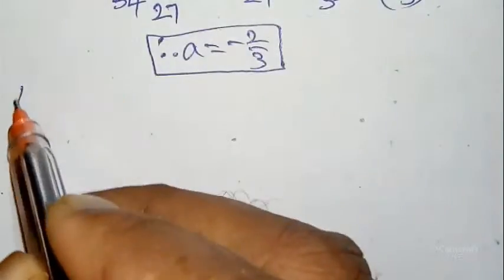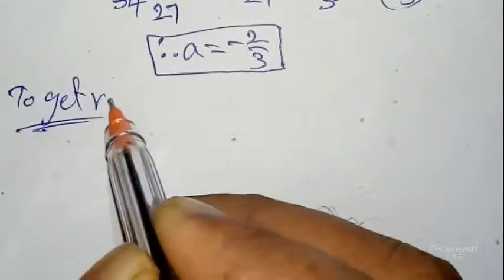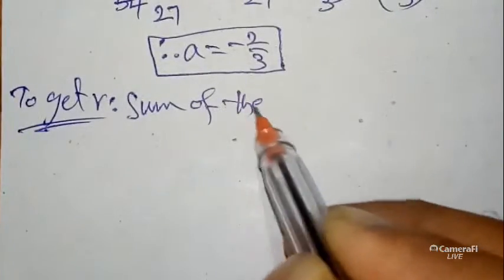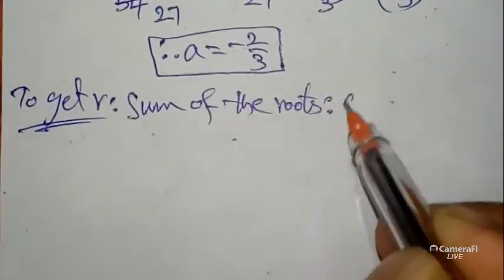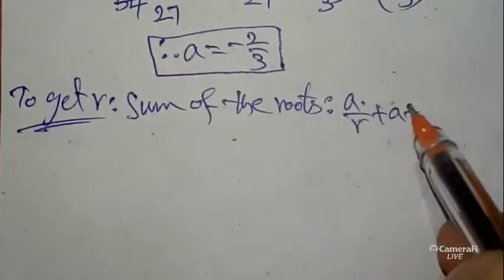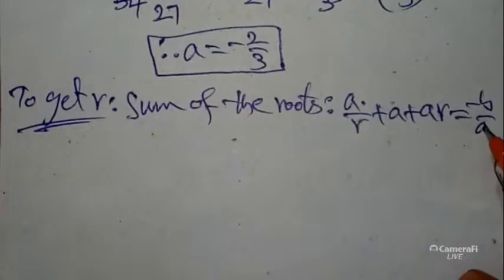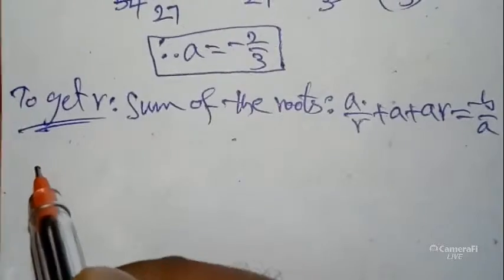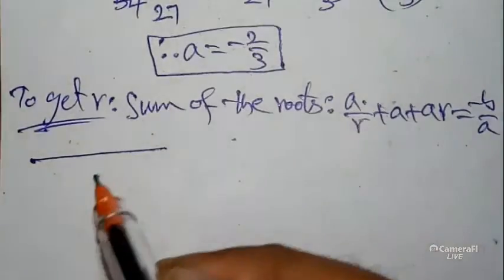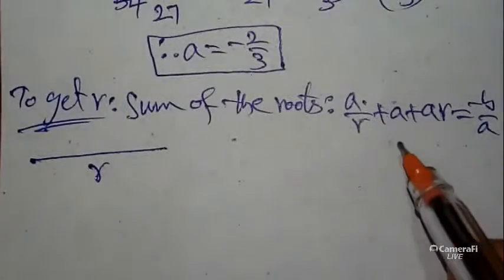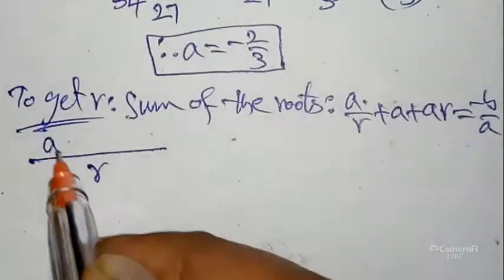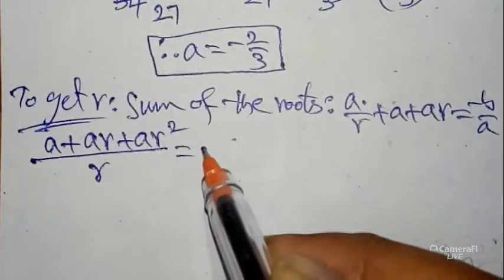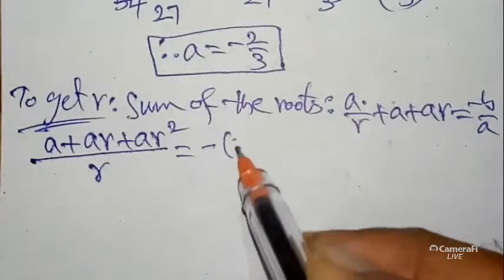Next, to get the r value, use the sum of the roots. Sum of roots: a/r + a + ar = −b/a. This is our logic — our short trick. Taking LCM, with r as LCM the expression becomes: a + ar + ar² all over r, equals −b/a. So a(1 + r + r²)/r = −b/a.